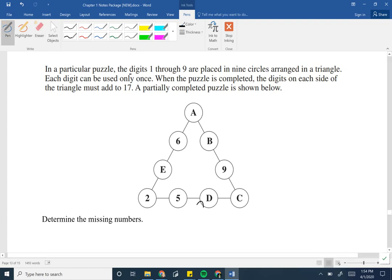We're using the digits one to nine. We need to know that. They're arranged in a triangle. I can see that below. Each digit can only be used once. Key idea right there. When the puzzle is complete, the digits on each side must add to 17. A partially completed puzzle is shown below.